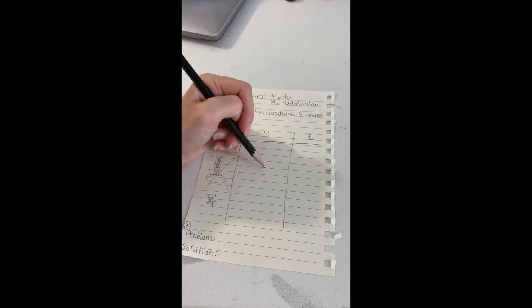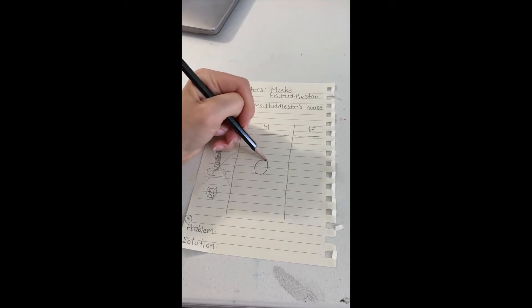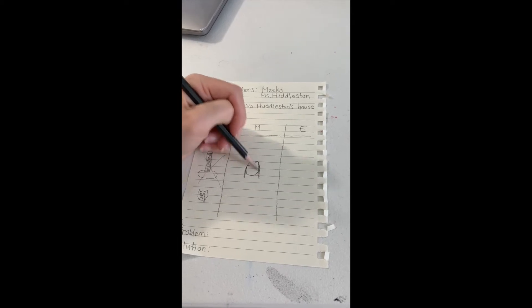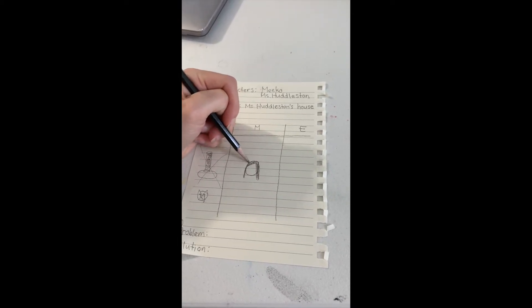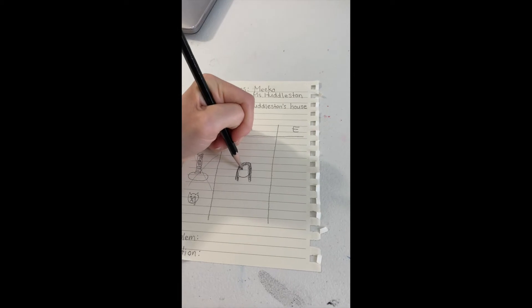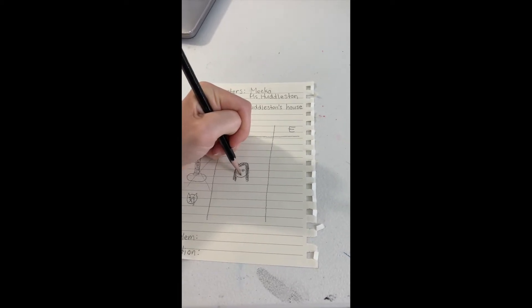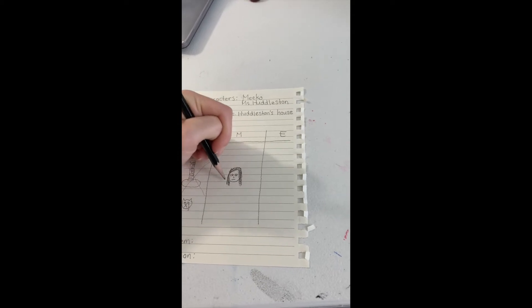The middle of the story will be about how Miss Huddleston has an idea of how to fix this problem. So, I'm going to draw a picture of Miss Huddleston, and I'm going to draw something that will help me to remember she has an idea of how to fix it.